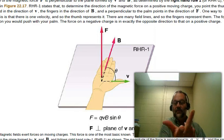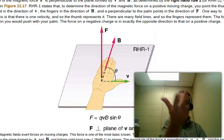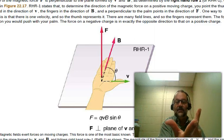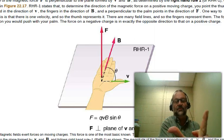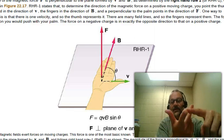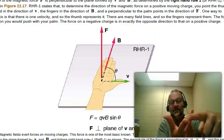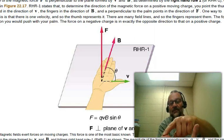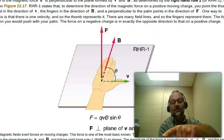So another way to think about this, let's see if I can do it so that you can actually see, is hold up your right hand and use your index and middle finger so that you make all three vectors at one time. Your index finger then is the velocity, your middle finger is the B-field, and your thumb then is the direction of the force.